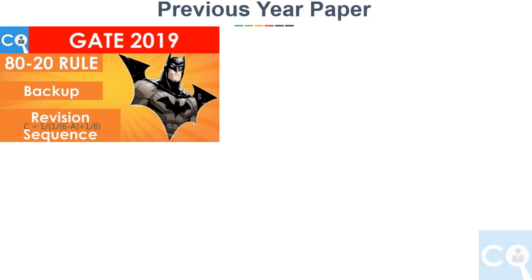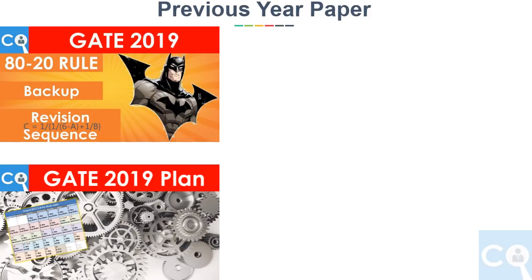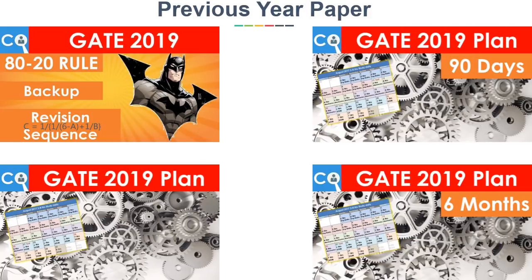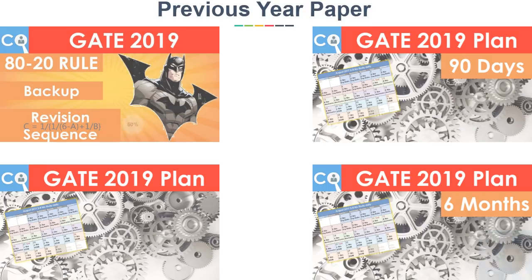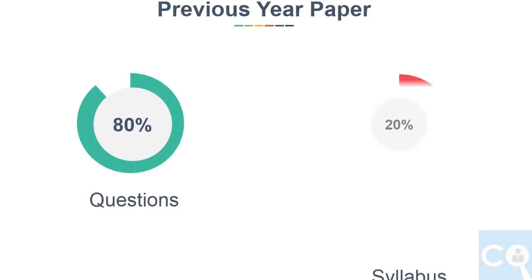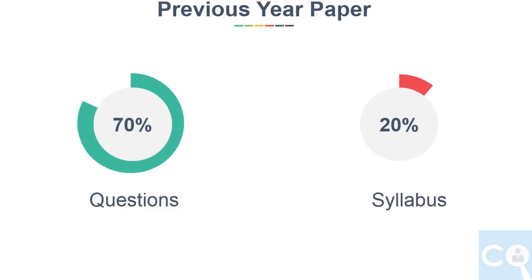Now let's start with the first point — previous year paper analysis. If you have seen my old videos on the Batman plan for 1 year, 6 months, and 90 days, we derived all important topics using the 80-20 rule, which says 80% of questions come from 20% of the syllabus. On the conservative side, we took plus or minus 10%, meaning 70% of questions come from 30% of the syllabus.